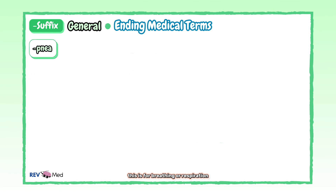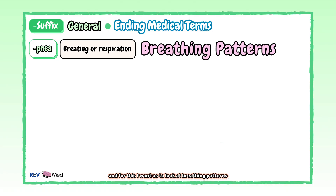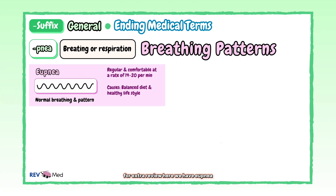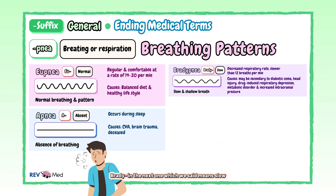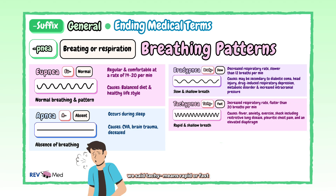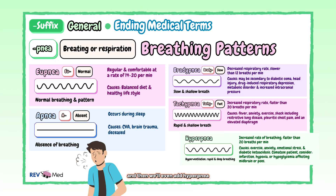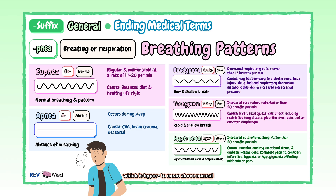Now we have "-pnea", which is for breathing or respiration. Let's look at breathing patterns for extra review. Eupnea — where "eu" is for normal — is a normal breathing pattern. Then we have no breathing, which is apnea — "a" for absent. The prefix "brady" means slow, giving us bradypnea, which is slow and shallow breathing. Tachypnea — "tachy" means rapid or fast — is rapid and shallow breathing. And we'll even add hyperpnea, which has "hyper" to mean above normal, and this type of breathing is hyperventilation, rapid and deep breathing.